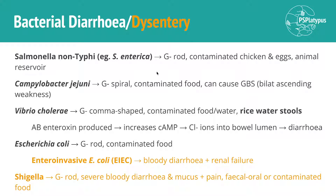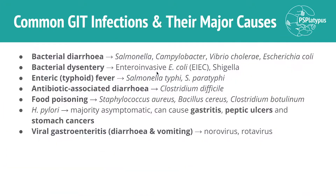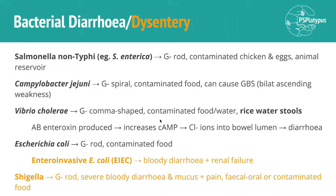Moving on to the breakdown of GIT infections — bacterial diarrhea or dysentery, with dysentery specifically being bloody diarrhea with pus, abdominal pain, and fever. Diarrhea in general has a pretty high morbidity and mortality, especially in developing countries, due to the really substantial fluid loss.